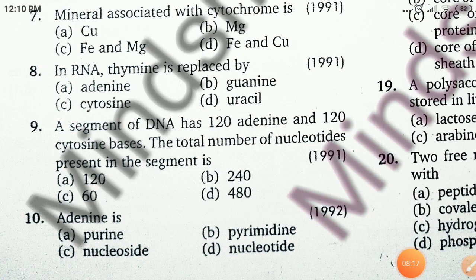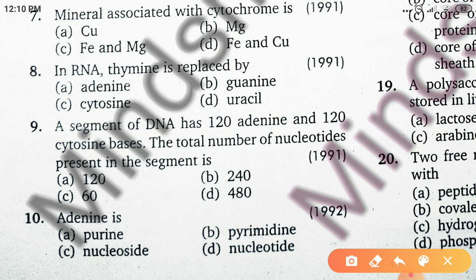The next question: what is adenine — purine, nucleoside, pyrimidine, or nucleotide? Adenine is a purine. Purines include adenine and guanine. Pyrimidines include cytosine, thymine, and uracil. So the answer is purine.